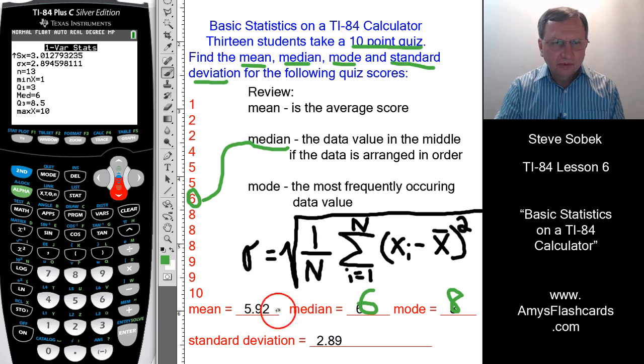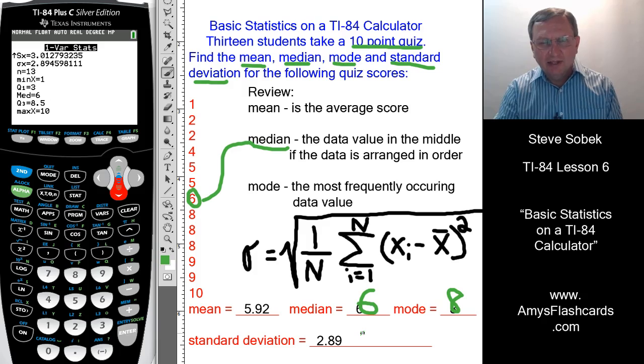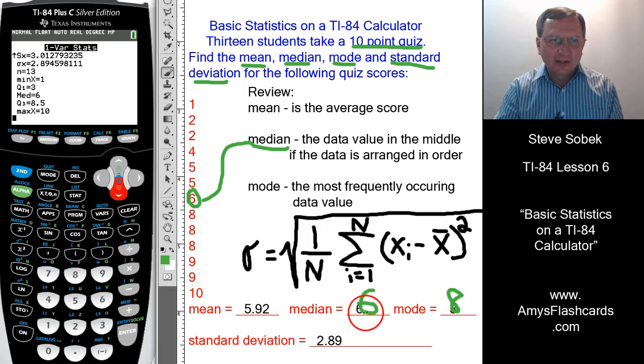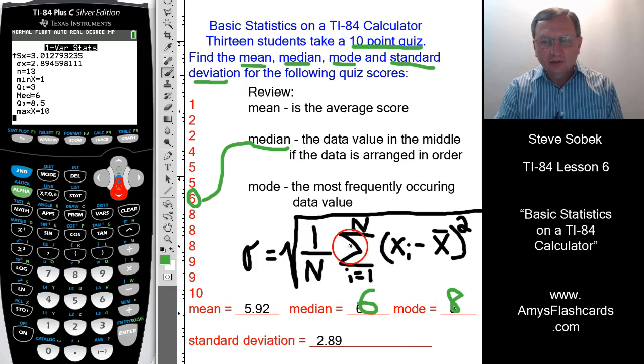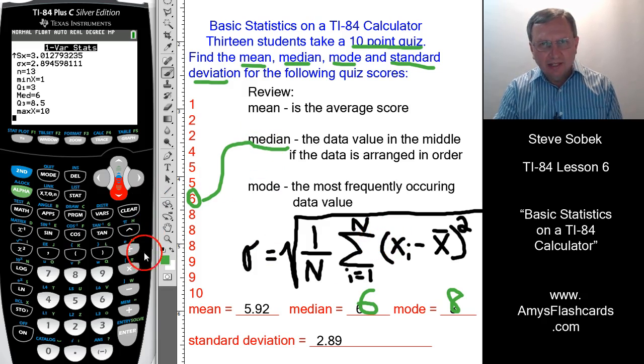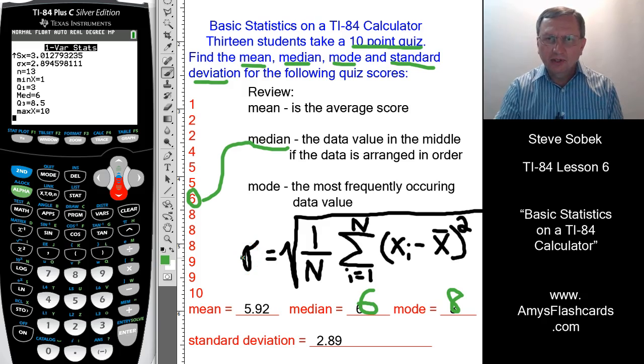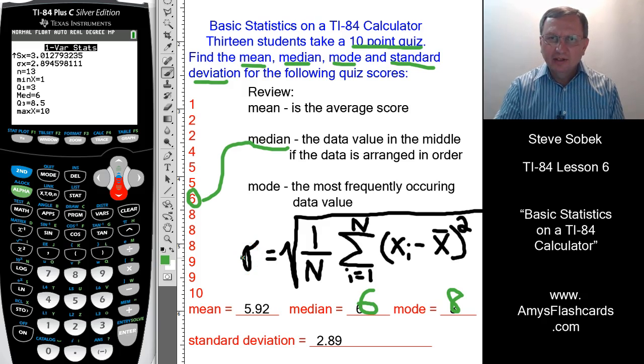There's our answers, and you notice that could be done pretty fast. And so hopefully you'll appreciate how to do one-variable statistics using the TI-84 calculator. Now, when you have more data values than this, I want to show you one more trick. So we're going to look at one more example with a larger data set, and I think you'll appreciate seeing this maneuver that we're going to pull off in the next example.